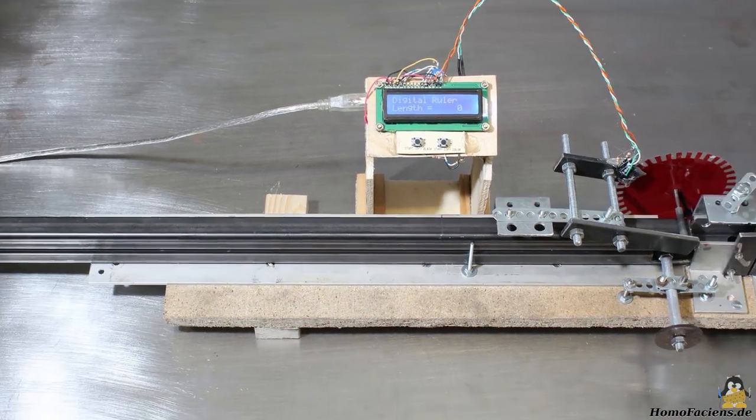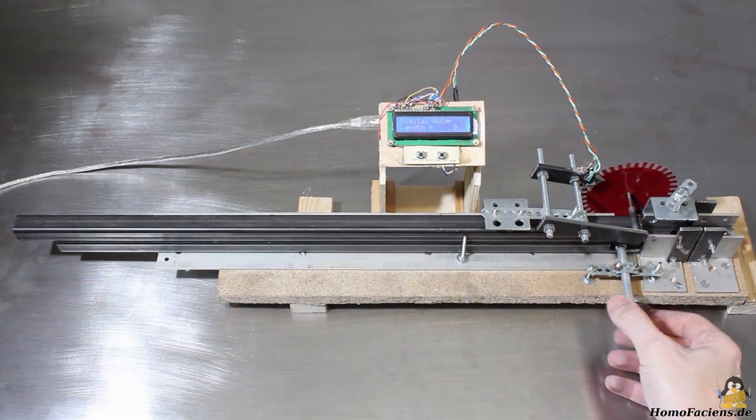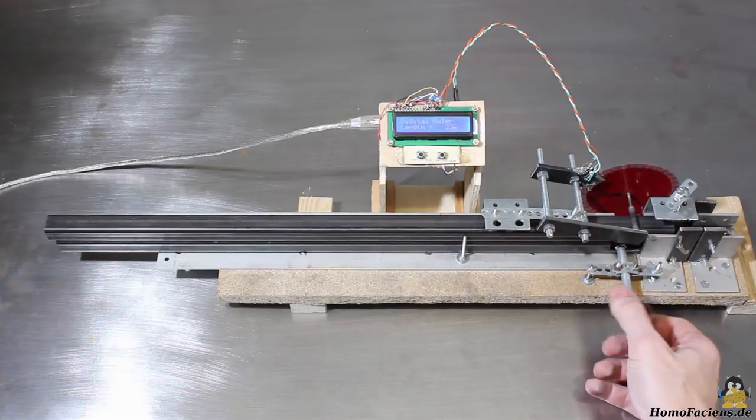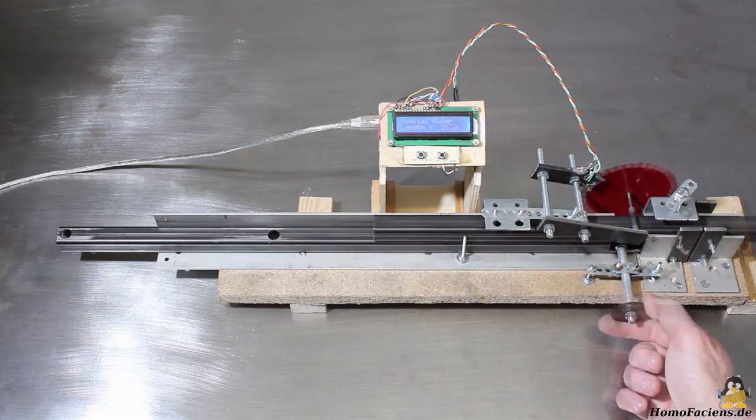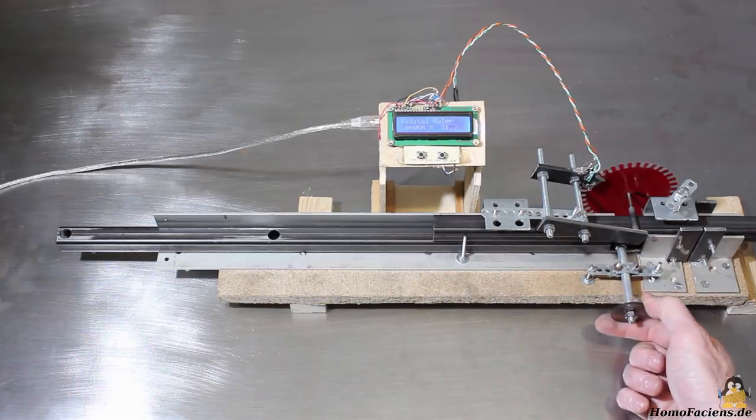Move the square tube for a known distance to calibrate the unit. Here the distance between the marking and the end of the tube is 40cm. With the number of pulses you get the conversion factor.